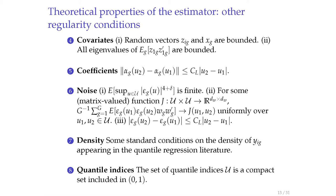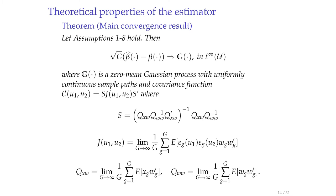The main convergence result states that for each quantile index u, our estimator is asymptotically zero-mean Gaussian. Additionally, as you vary the quantile index, the whole process of estimates converges in distribution to a zero-mean Gaussian process with uniformly continuous sample paths and some covariance structure. It looks complicated, but it's essentially two-stage least squares standard errors with a quantile index twist.